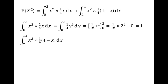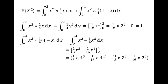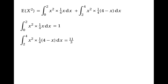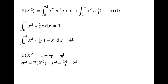The second integral is x²·(1/4)(4 − x) from 2 to 4, which is the integral of x² − (1/4)x³ from 2 to 4, giving (1/3)x³ − (1/16)x⁴ evaluated between 2 and 4, which works out to 11/3. So E[X²] = 1 + 11/3 = 14/3. The variance is E[X²] − μ² = 14/3 − 2² = 14/3 − 4 = 2/3.